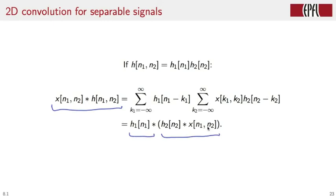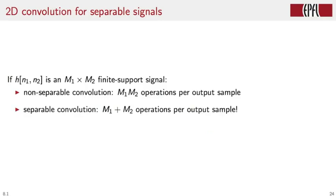So if we assume, for instance, that h is separable in the convolution of h of N1 and N2 with x of N1 and N2, then the convolution can be performed in two steps. First, we convolve x with h2 of N2, using only N2 as the free variable, and then we convolve the result with h1 of N1. The consequences of this split are extremely important when we consider the computational requirements of the convolution operator. If h of N1 and N2 is a finite support signal, and the support is of size capital M1 times capital M2, a non-separable convolution will require M1 times M2 operations per output sample, whereas a separable convolution will require M1 plus M2 operations per output sample, which is generally much smaller than the number of operations required in the previous case.